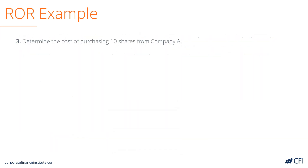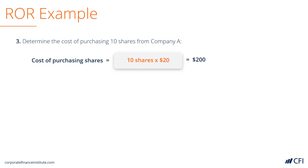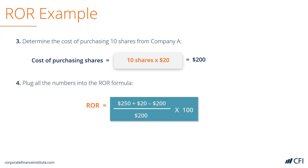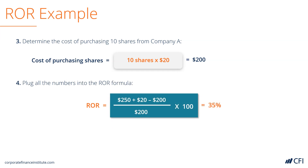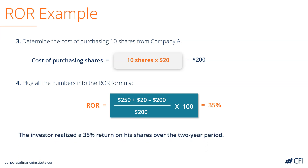Next, we need to calculate the cost of purchasing the shares, which is calculated by taking 10 shares multiplied by $20, equaling $200. Now we can plug all these numbers into the rate of return formula: $250 plus $20 minus $200, all divided by $200, times 100 — equaling 35%. That means the investor realized a 35% return on his shares over the two-year period.